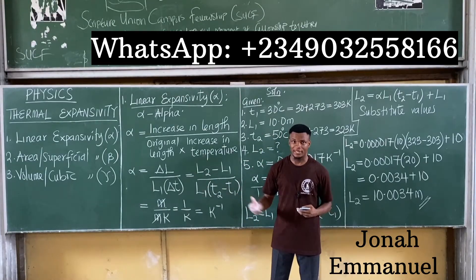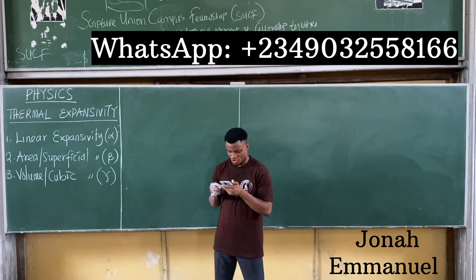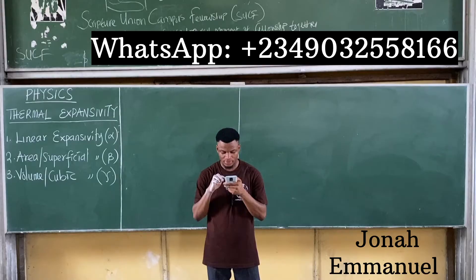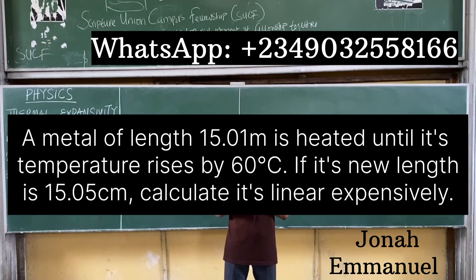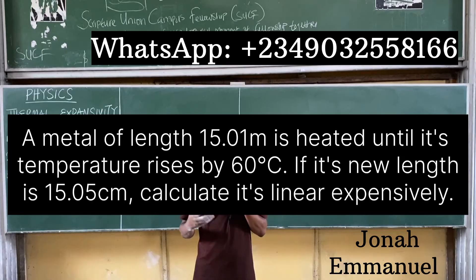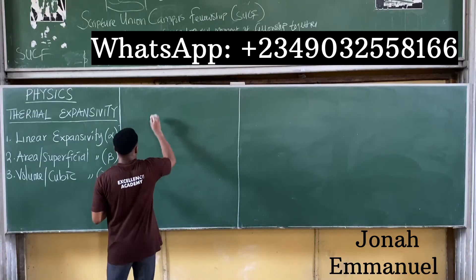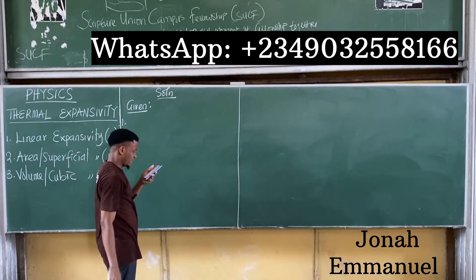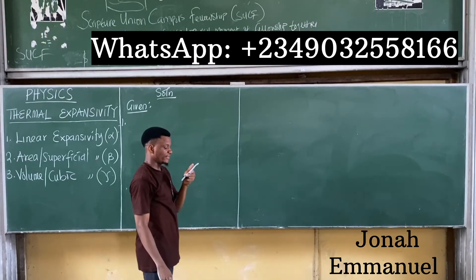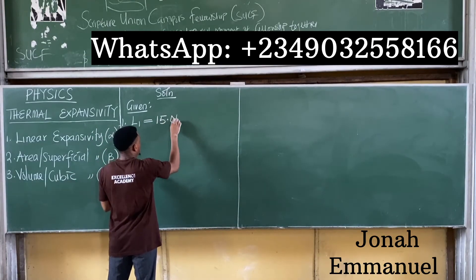Let's look at the second example on linear expansivity. A metal of length 15.01 meters is heated until its temperature rises by 60 degrees Celsius. If its new length is 15.05 meters, calculate the linear expansivity.